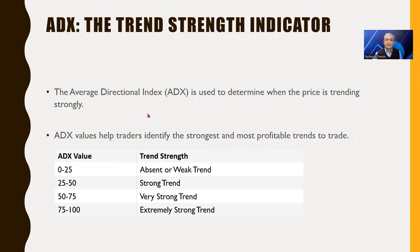The ADX is used to determine whether prices are trending or not. When they are not trending, they are in some kind of contraction; when they are trending, they are in some kind of expansion. So what we really want to do is identify the ADX when it is in contraction — when it is not trending.